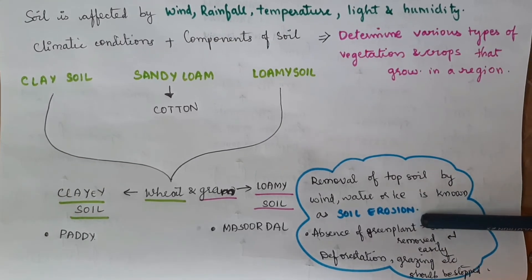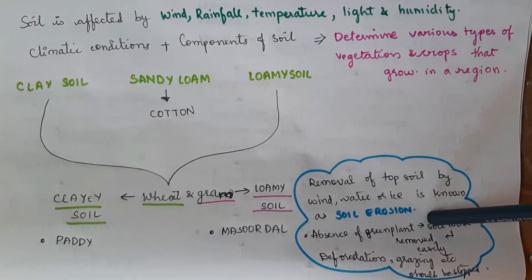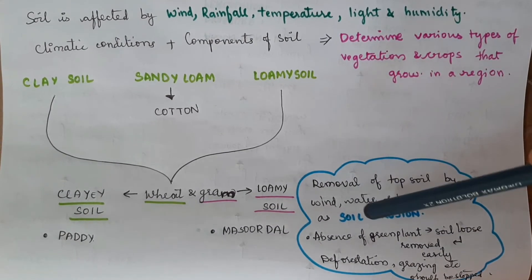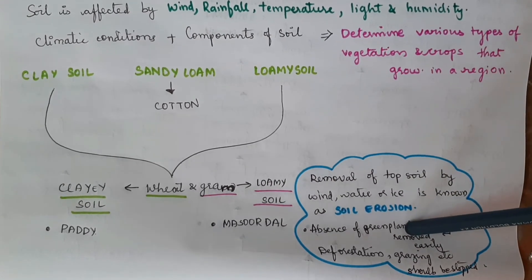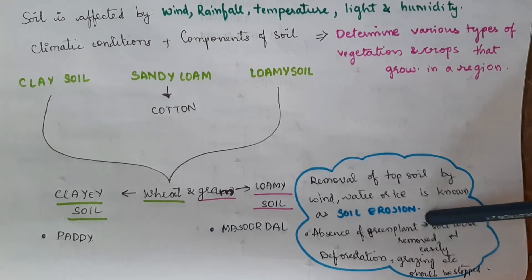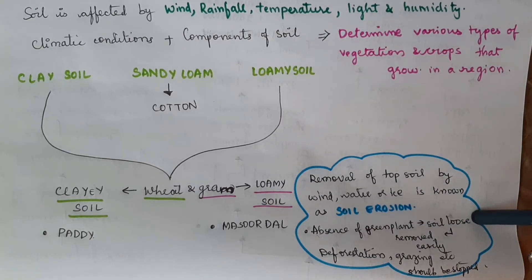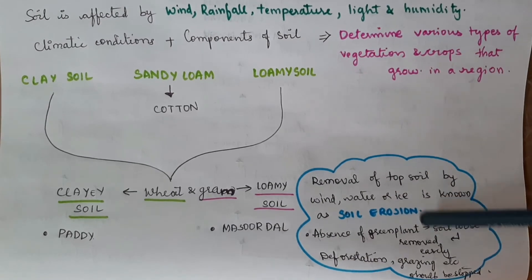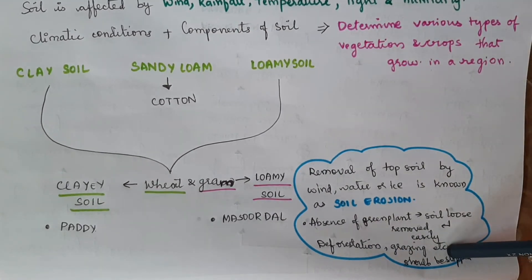This is soil erosion. The removal of topsoil by wind, water, or ice is known as soil erosion. Soil erosion removes the top layer of soil. The roots of plants help hold the soil in place. Deforestation and overgrazing contribute to soil erosion, while planting trees can help stop it.